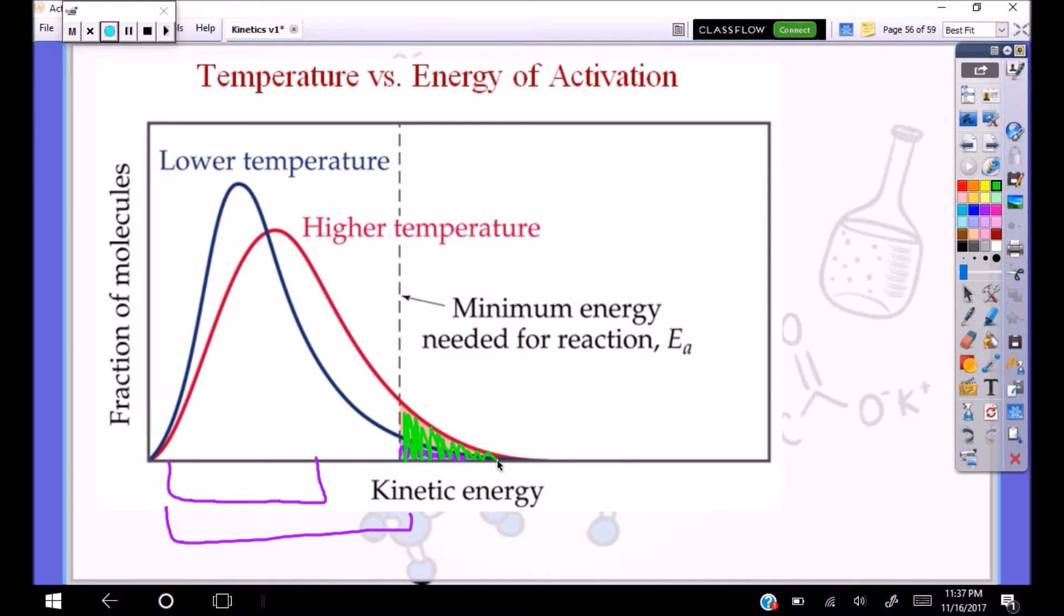So if we think about it too, if we have a smaller activation energy, that means we typically have a larger rate constant. And therefore it will be a faster rate. If we have a larger activation energy, we would have a smaller rate constant and a slower rate. There's a bigger barrier that we have to overcome. It's also important to note that the kinetic energy of the molecules before collision is equal to potential energy during a collision. So that's why we have these transition states.